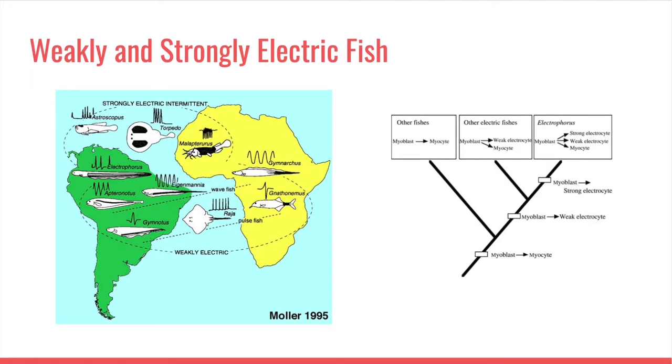We categorize bioelectric fields into two main types: weak or strong. A weak electric organ discharge consists of pulses or waves up to one volt that are used for electrolocation, communication, object detection, and mating. Strong EODs, which range from 10 volts to 860 volts, can produce up to an amp of current. The signal is capable of stunning and killing other animals and is used for hunting and defense. Rays, catfish, and electric eels are all examples of strongly electric fish, though most electric fish are strictly weakly electric.